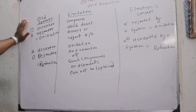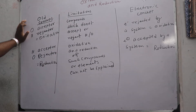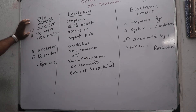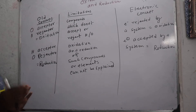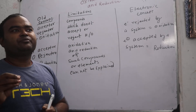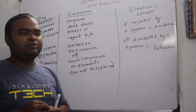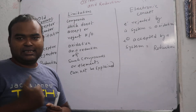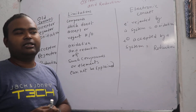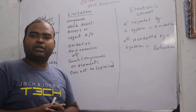If we look at the old concept, oxidation and reduction is an old concept. The old concept was that any element or compound which accepts oxygen — an oxygen acceptor — or which rejects hydrogen, that process is called oxidation.